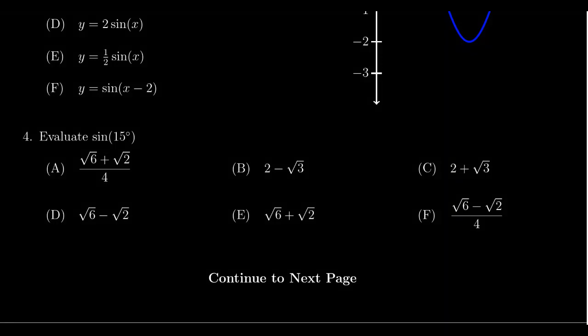In this video, we discuss the solution to question number four for practice exam number two for Math 1060, in which we're asked to evaluate sine of 15 degrees without a calculator. We can evaluate special angles like 30 degrees, 45 degrees, and 60 degrees, and we also have a formula sheet of trigonometric identities. One way to use those identities is to think of 15 degrees as the difference between 45 degrees and 30 degrees.